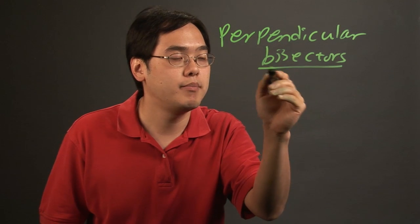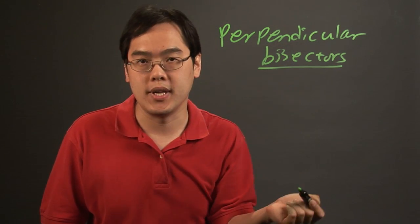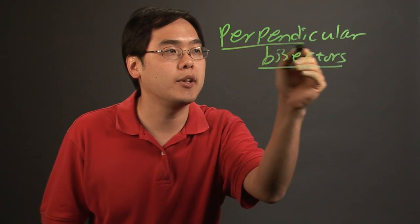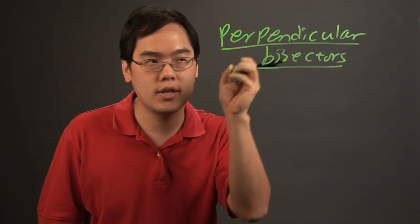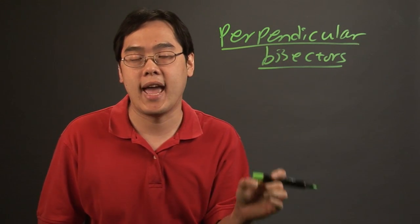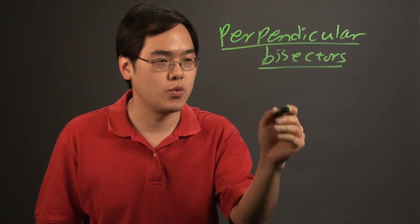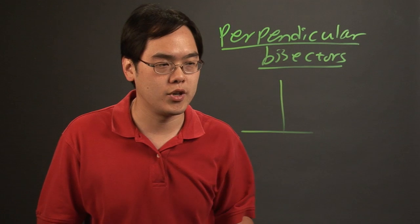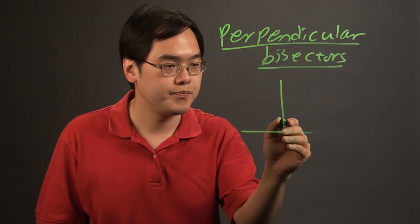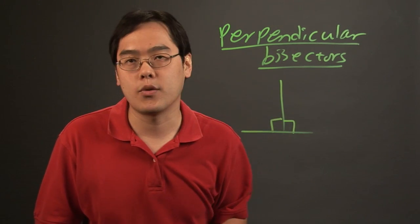So bisector cuts a piece in half and perpendicular means you're cutting it or you're intersecting something at a 90 degree angle. That's where the perpendicular symbol comes in and you get to form 90 degree angles as a result.